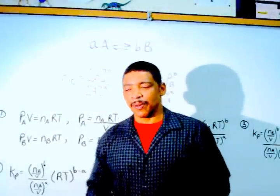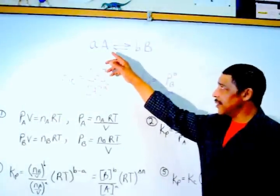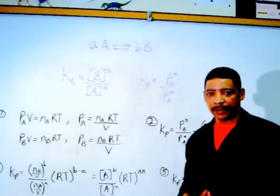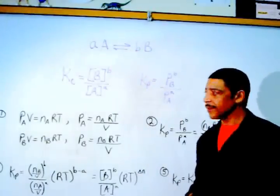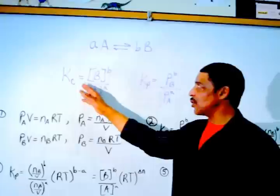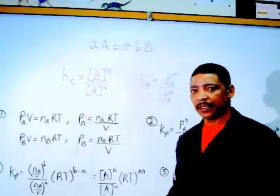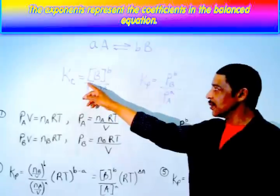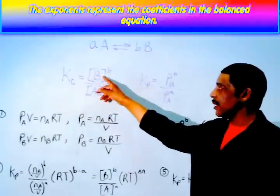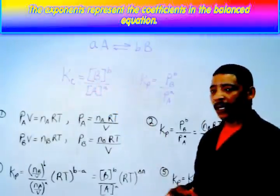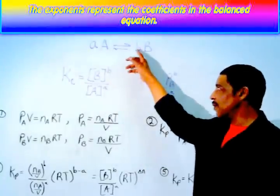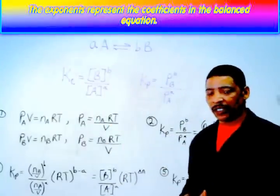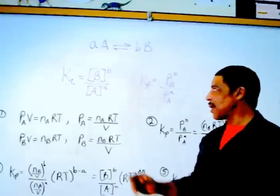Consider the following example where reactant A comes to equilibrium with product B. The Kc expression for this hypothetical reaction is written as follows, where Kc is equal to the concentration of B raised to the b power, where b reflects the coefficient in the balanced equation, divided by the concentration of A raised to the a power.